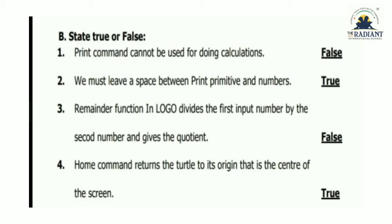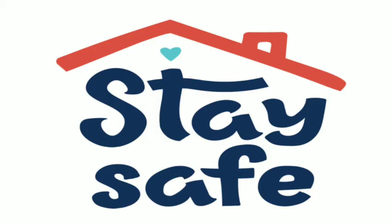Number three: the remainder function in Logo divides the first input number by the second number and gives the quotient. The remainder function gives the remainder, not the quotient, so it is false. Number four: the home command returns the turtle to its origin, that is the center of the screen — it is true. Whenever we give the home command the turtle goes to the center of the screen. I hope all of you understood everything. If you have any query, feel free to ask. We will continue in the next video. Till then, stay safe, stay healthy. Goodbye children.